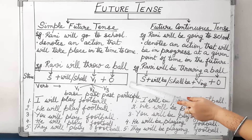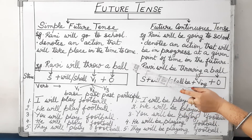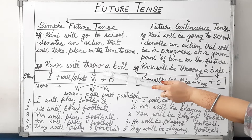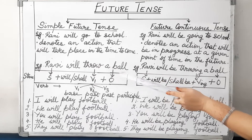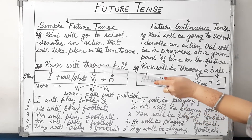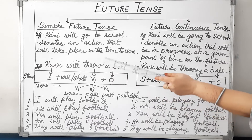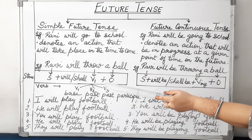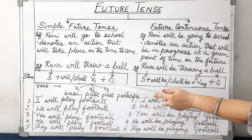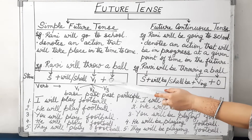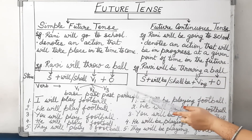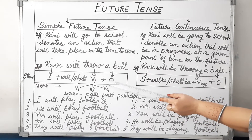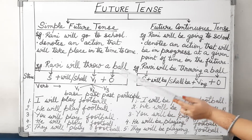Now I will explain the structure with the help of another example. Example: Ravi will throw a ball. Here Ravi is the subject. We use will or shall with future tense, and we use the base form of the verb — V1 — plus object. So the structure is: subject plus will or shall plus V1 plus object.